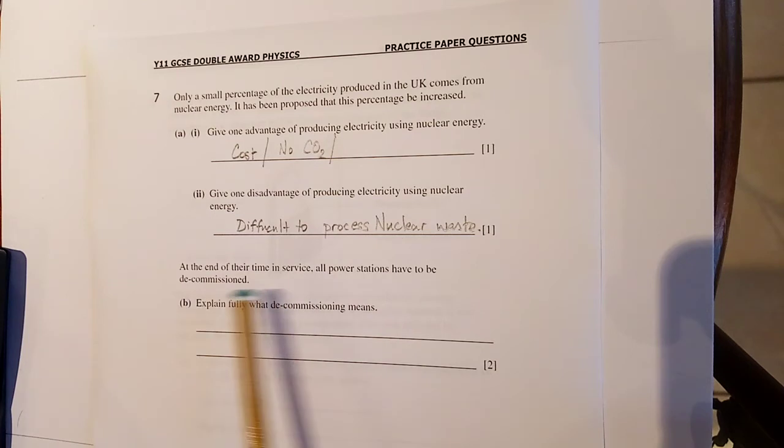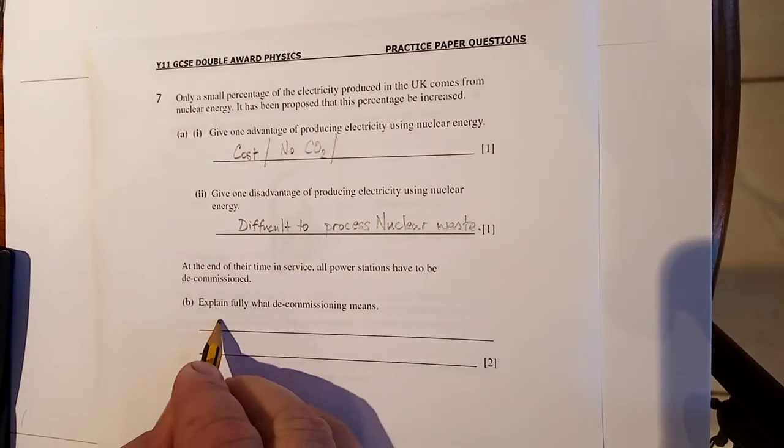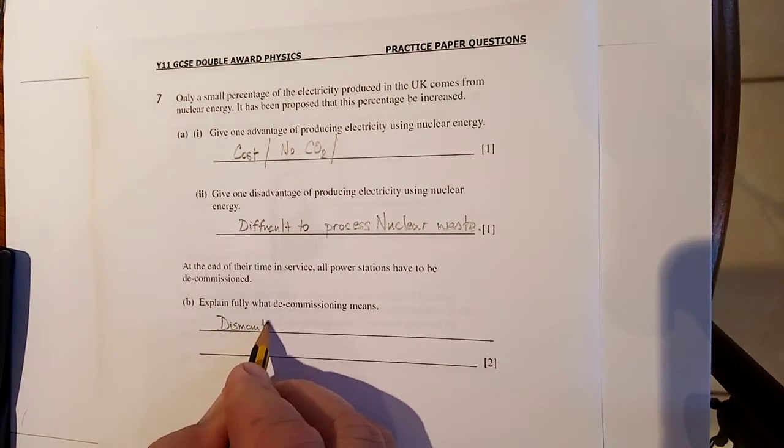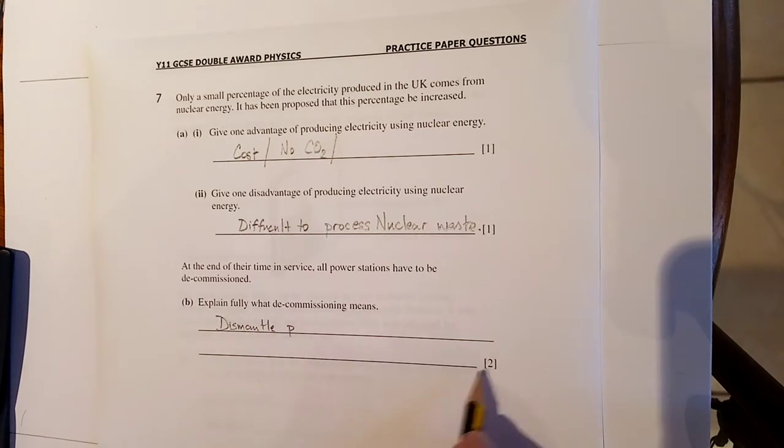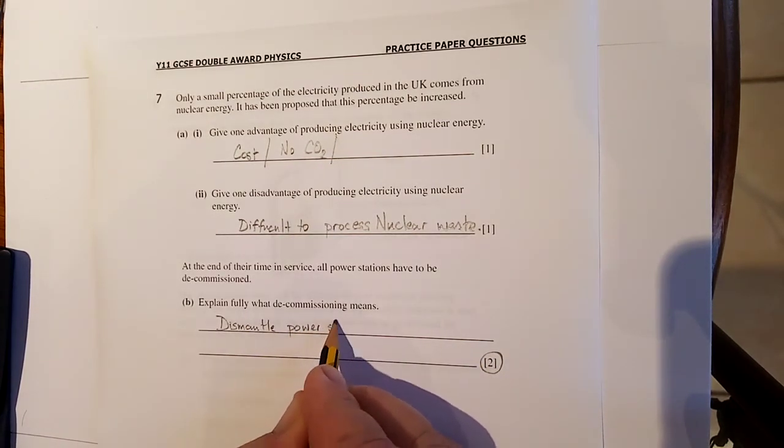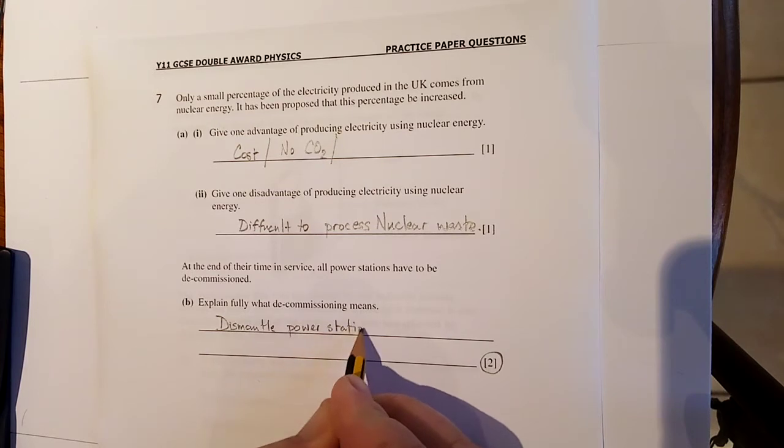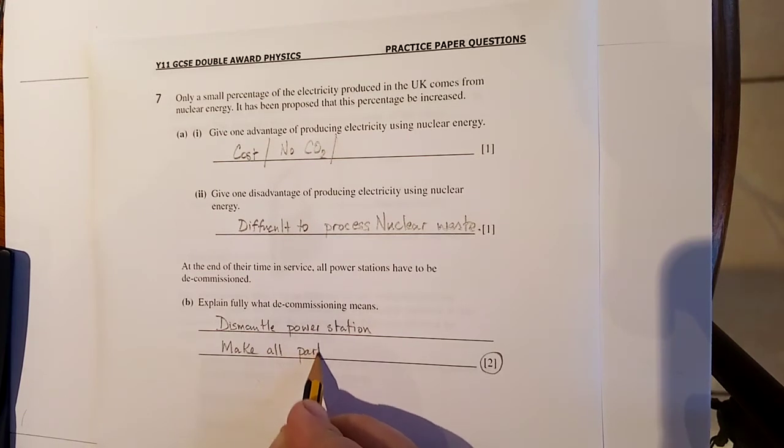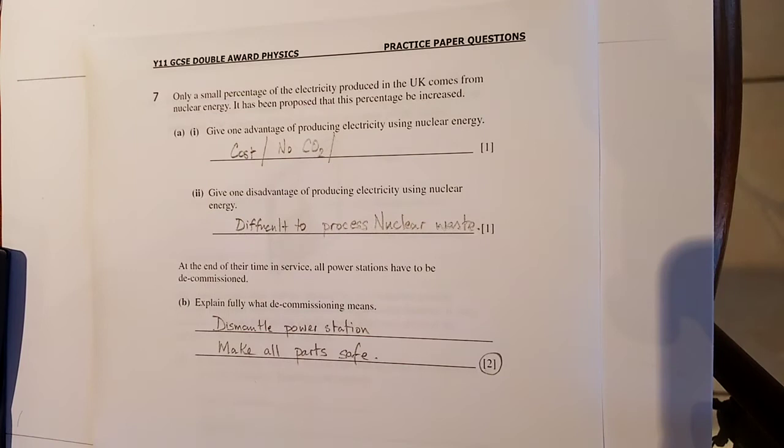At the end of their time in service, all the power stations have to be decommissioned. Explain what's fully decommissioned means. So, dismantle the power station. That's part of it. Remember, I'm looking for two marks. Dismantle the power station. Make all parts safe. Just don't throw them in the paint of the hedge. Right? They all have to be properly disposed of.